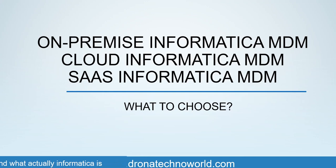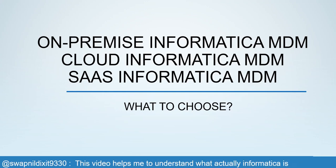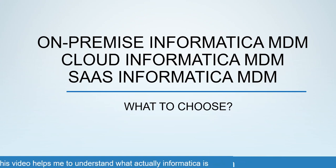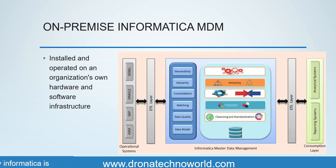Before going to understand the differences between these MDM implementations, we need to understand what each Informatica MDM implementation means. In on-premise Informatica MDM, we get the software from the Informatica vendor. We also get the license for each of the software, such as Activos, Informatica core software itself, and Informatica Power Center — you acquire the license for each of these products.